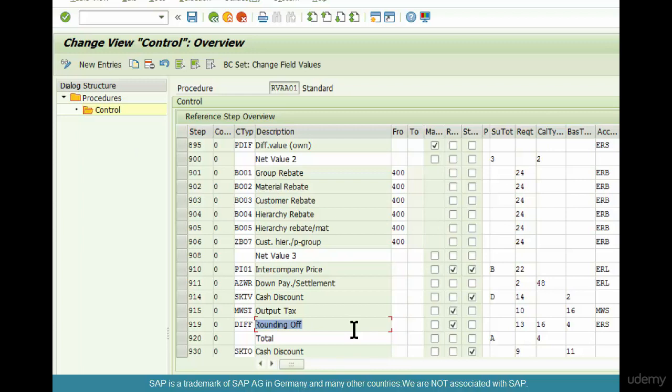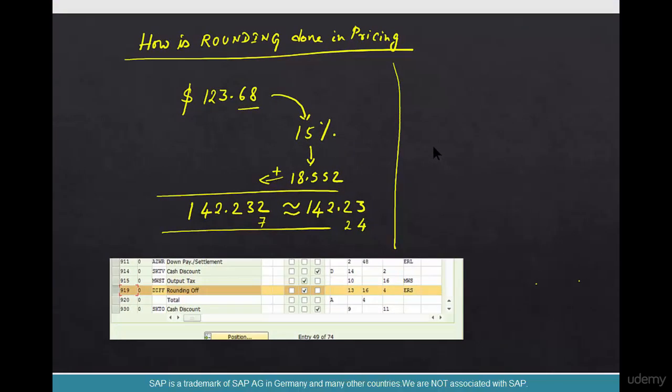And what are the corresponding conditions against it? So if you look at DIFF, the requirement should be 13, the calculation type should be 16, the base calculation type should be 4. What does this mean? So SAP provides an out-of-the-box condition type called DIFF that can be used to do this rounding automatically. Now, as you can see, this is the requirement. So requirement for this is 13, calculation type equal to 16. So these are the two key parameters.